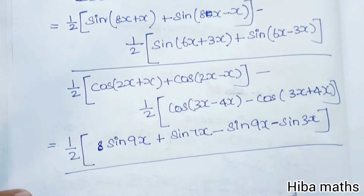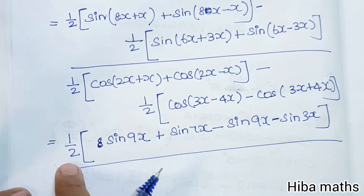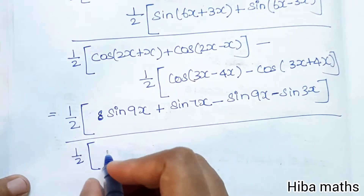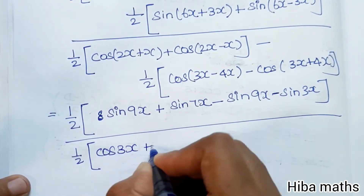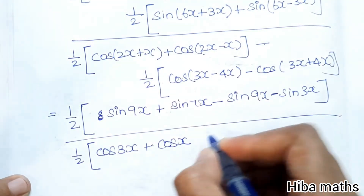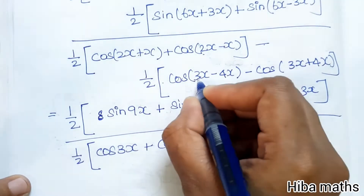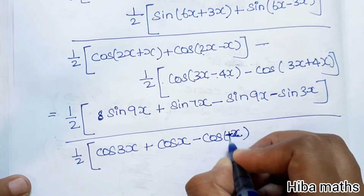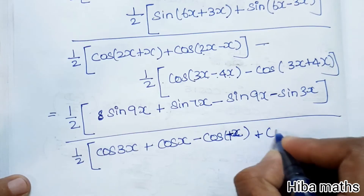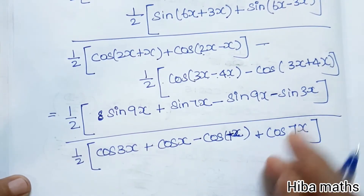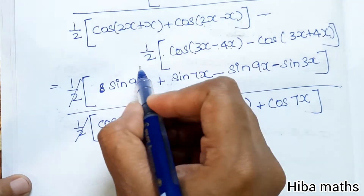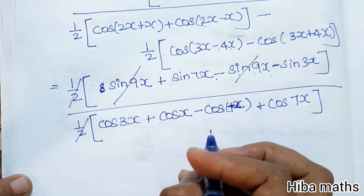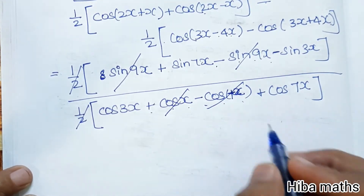Half is common — you can finish this in one line. For the denominator: half of cos(2x plus x) is cos 3x, plus cos(2x minus x) is cos x, minus cos(3x minus 4x) which is cos(minus x). Since cosine is an even function, cos(minus x) equals cos x, so minus into minus gives plus cos 7x. Now half and half cancel. Plus sin 9x minus sin 9x cancels, and plus cos x minus cos x cancels.